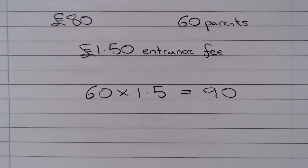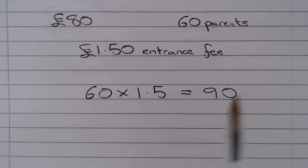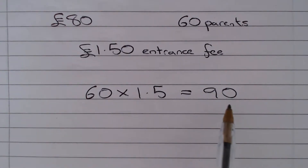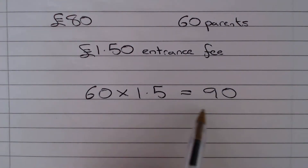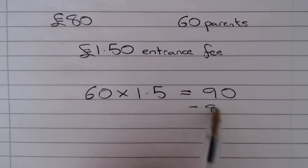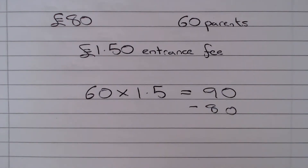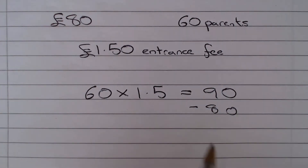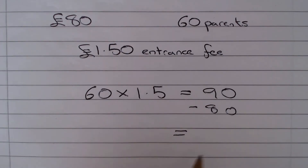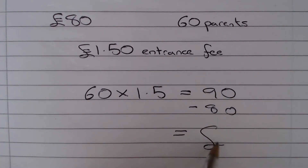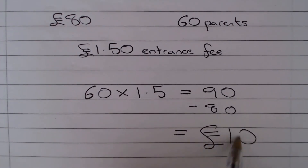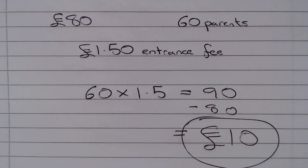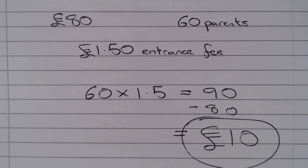So in total there was £90 generated from the entrance fees, but we need to take away from that the £80 for promotion, costumes and refreshments. And when we do that we are left with £10. So that is the amount that was left for the school funds.